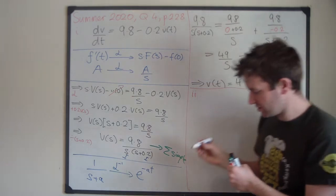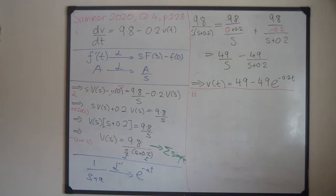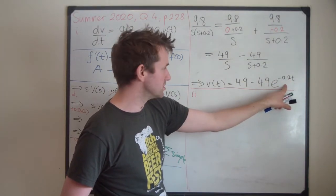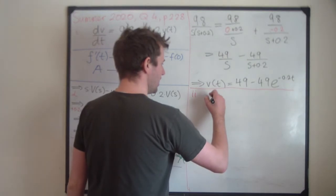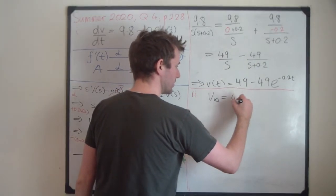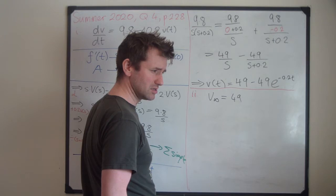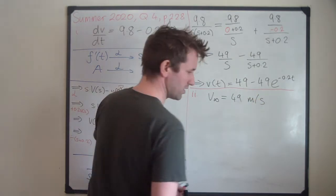Part two asks to find the terminal velocity. The hint is that terminal velocity is what happens when t is large. When time gets big, negative exponentials go to zero. So 49 times e^(−0.2t) goes to zero, and you're just left with 49. The terminal velocity v(∞) = 49 meters per second.